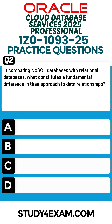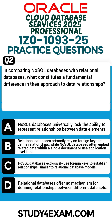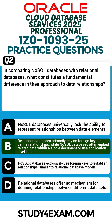Question 2. In comparing NoSQL databases with relational databases, what constitutes a fundamental difference in their approach to data relationships? Correct answer: B. Relational databases primarily rely on foreign keys to define relationships, while NoSQL databases often embed related data within a single document or use application-level links.